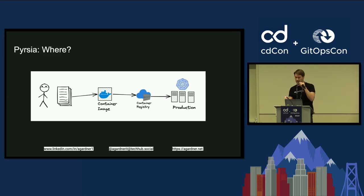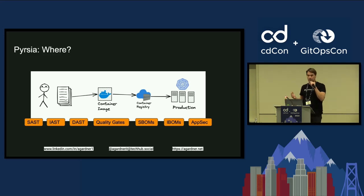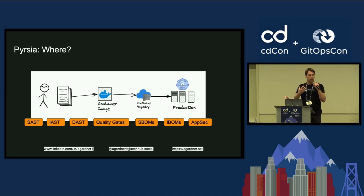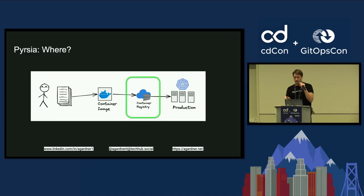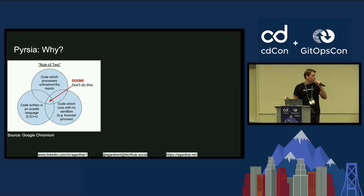So where does Persia fit into this flow, and why? As you've heard all morning, there's a myriad of different tools: there's SAST, IAST, DAST tools; there are quality gate tools within the pipeline like Captain; there are SBOMs and IBOMs and AppSec tools that run all the way into production — things like continuous scanning at a trace level and runtime blocking. So where does Persia fit in? Logically, Persia fits into the container registry part of this flow.